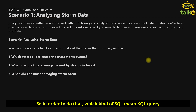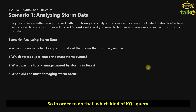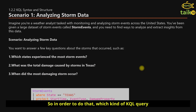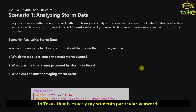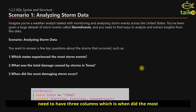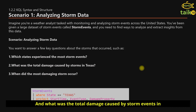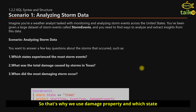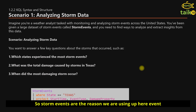In order to do that, we need to write a KQL query. We use 'storm_events' as the table name, then use a pipe with 'where state == Texas' for an exact match, and then 'project' — which is like a SELECT statement — to choose three columns: start time (when the most damaging storm occurred), damage property (total damage in Texas), and event type (which storm events occurred).